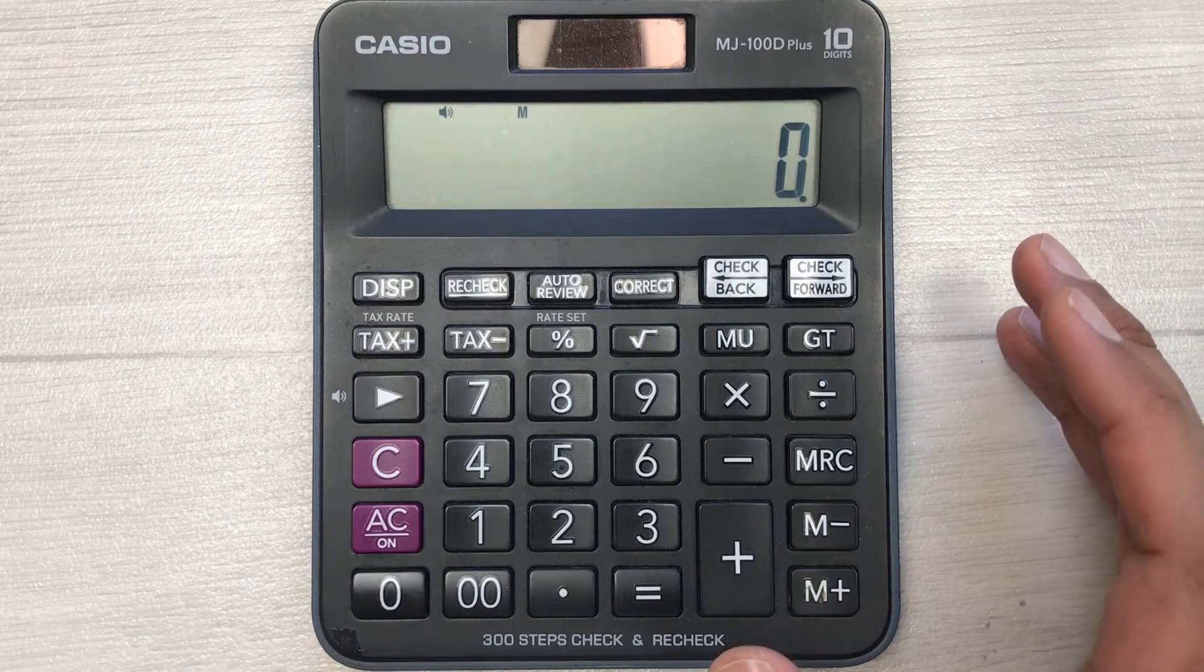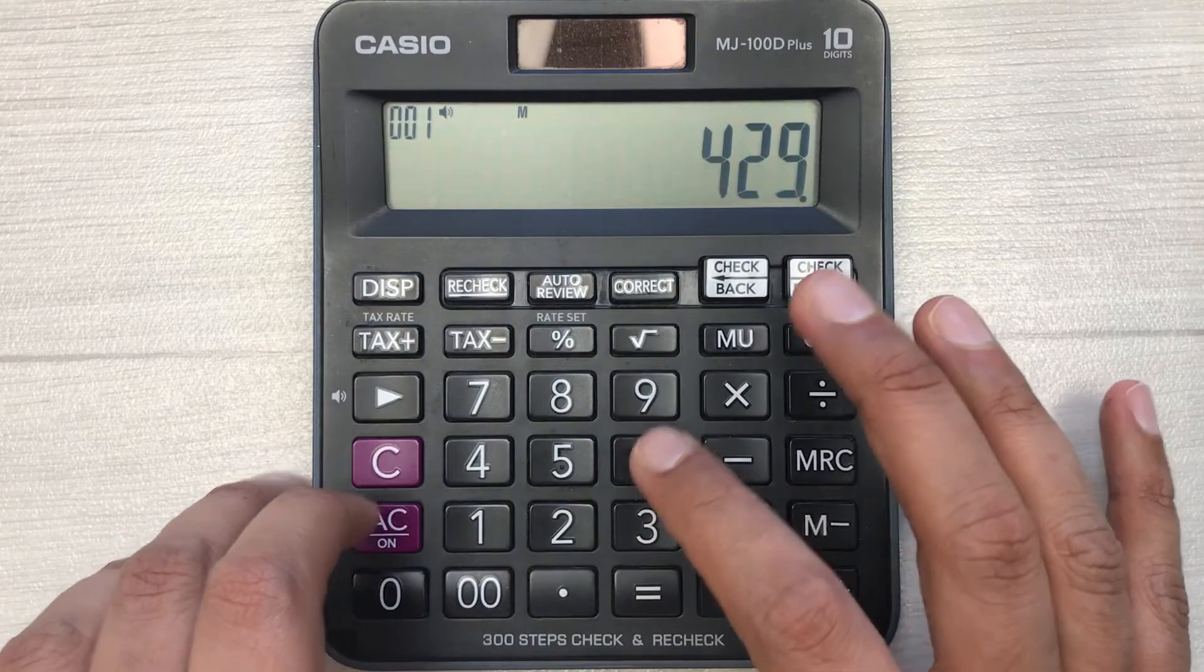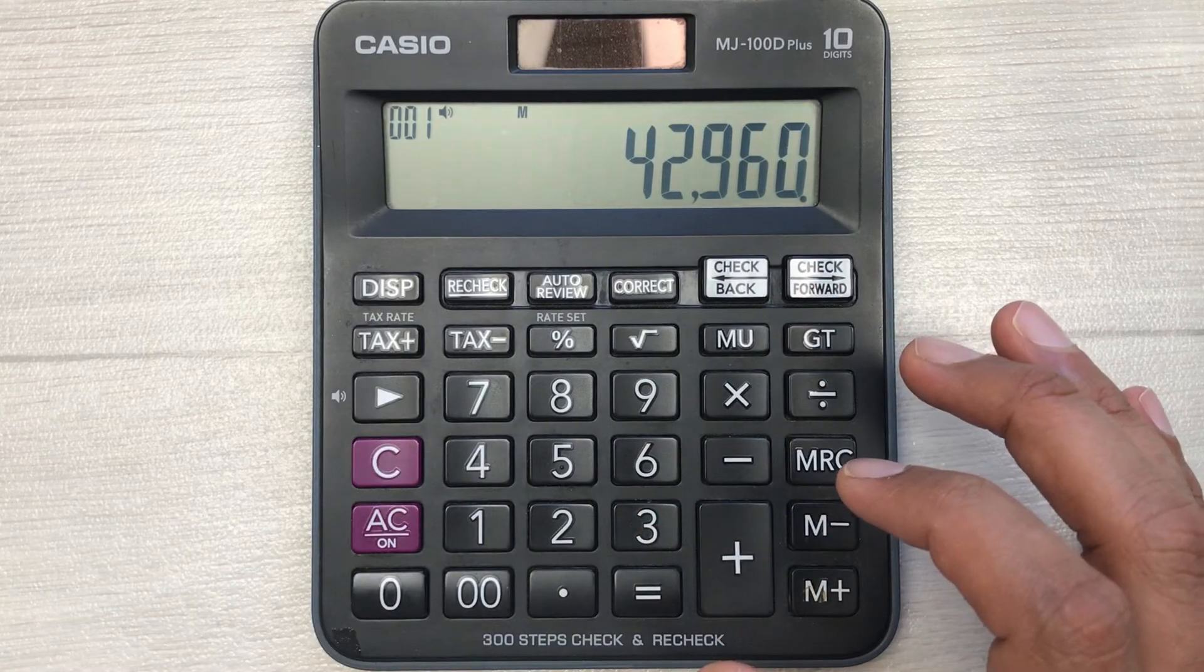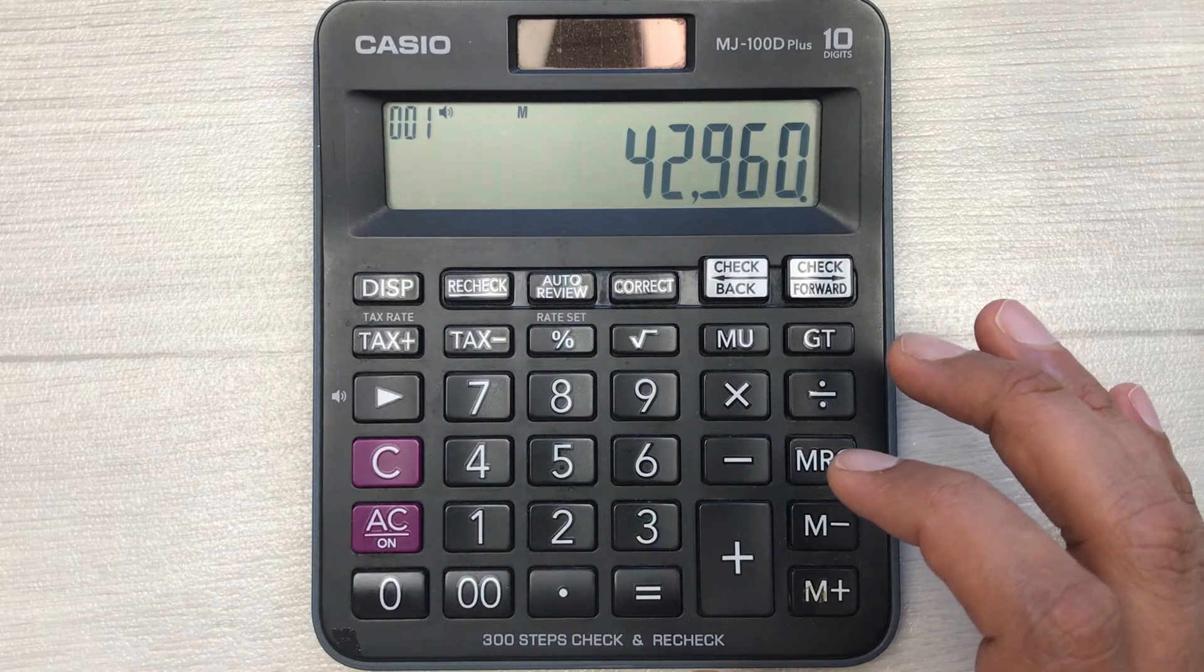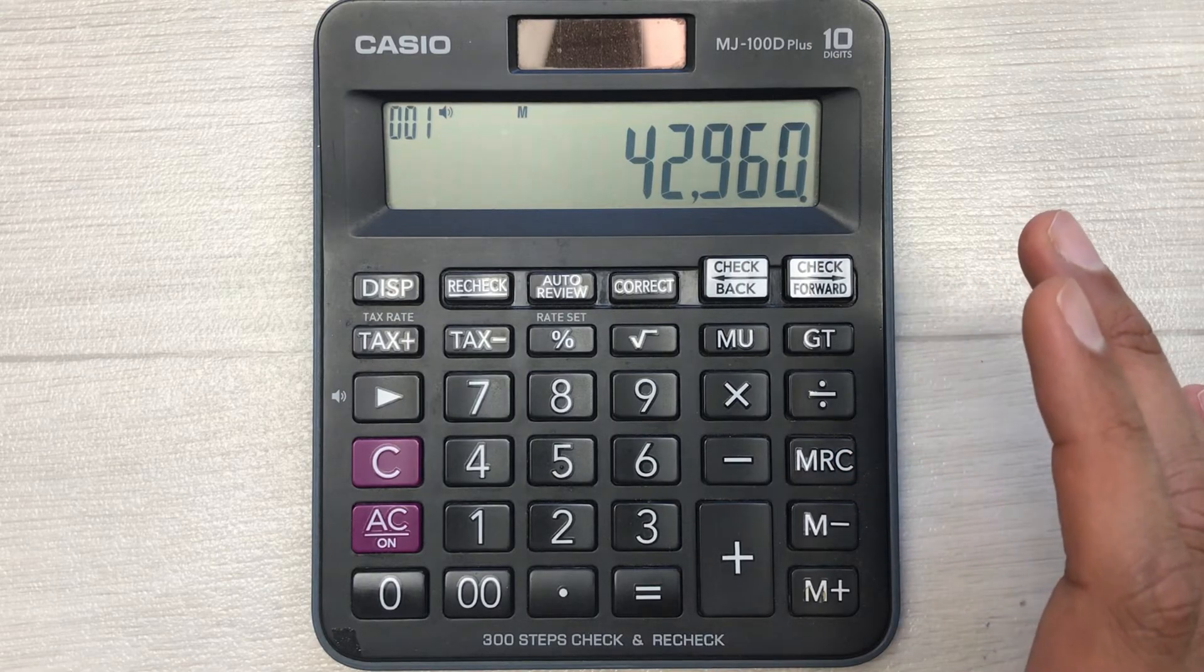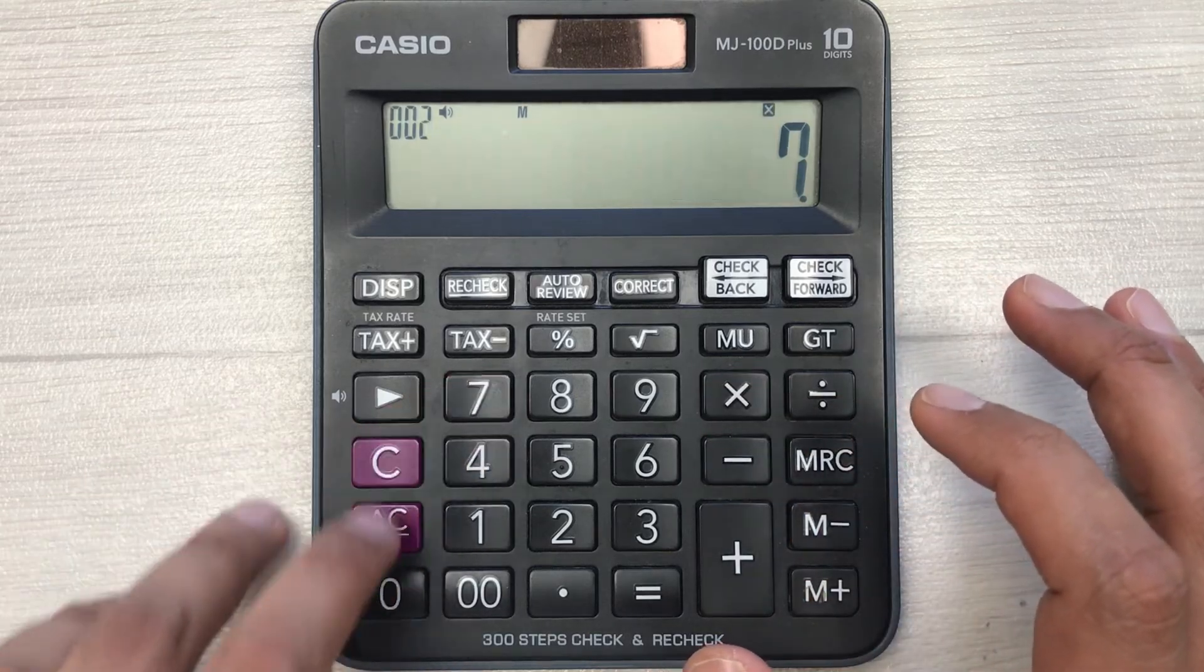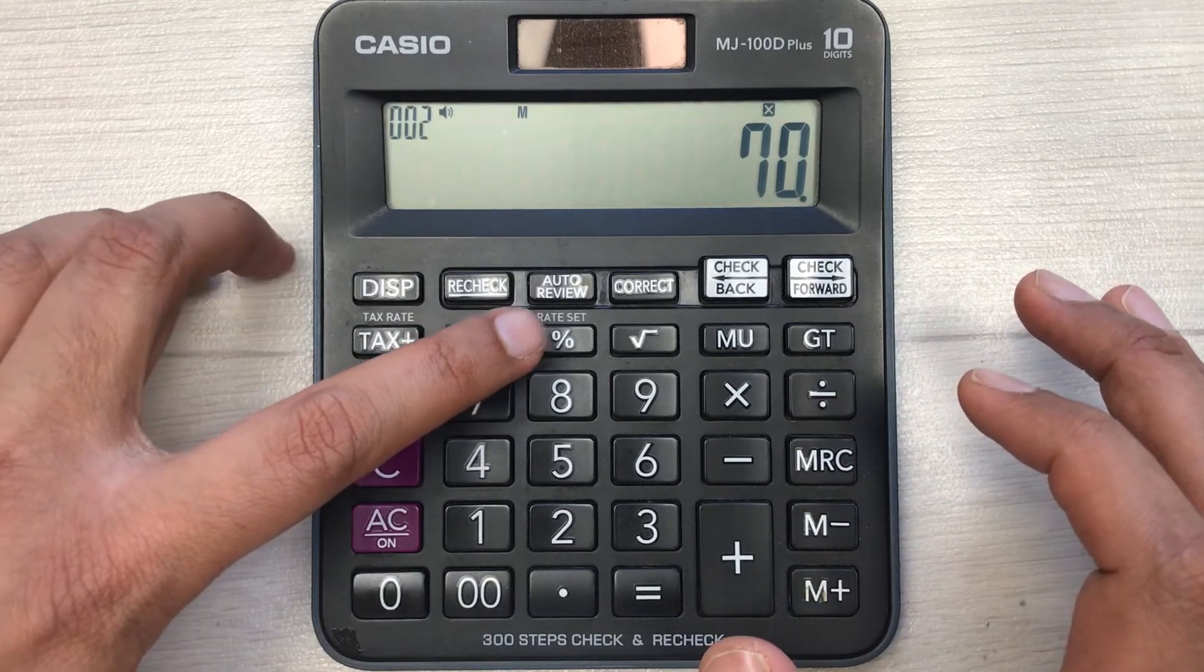Let's say we have an item and the price of that item is $42,960 and you want to find out what will be the final price after 30% discount. Same thing you have to do: multiply it with 70 and then press this percentage button.